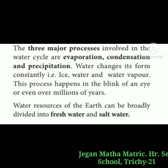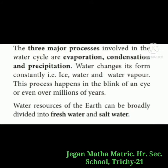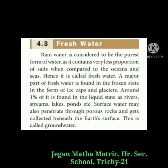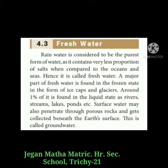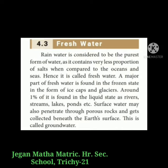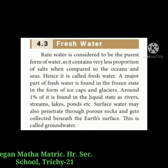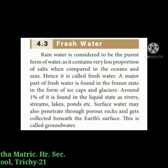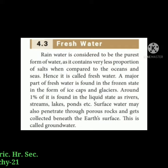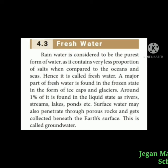Water resources of earth can be broadly divided into freshwater and saltwater. Rainwater is considered to be the purest form of water as it contains a very low proportion of salt when compared to the ocean and the seas, hence it is called freshwater. A major part of freshwater is found in the frozen state in the form of ice caps and glaciers. Around 1% of it is found in the liquid state as rivers, streams, lakes, ponds, etc. Surface water may also penetrate through pores and rocks and collect beneath the earth's surface — this is called groundwater.